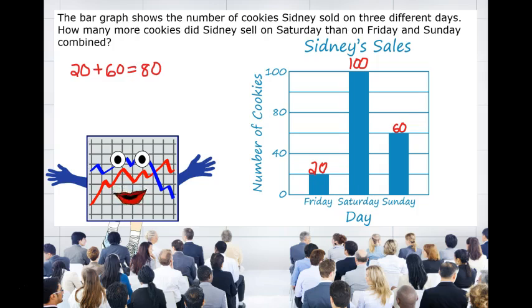And since we want to know how many more cookies she sold on Saturday than both those days combined, we would subtract the 80 cookies from the 100 that she sold on Saturday. That would leave us with 20 cookies, which is our answer.